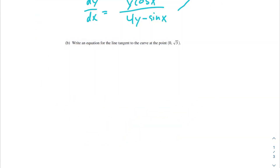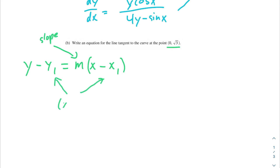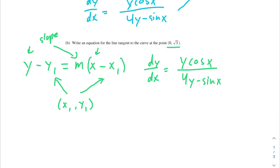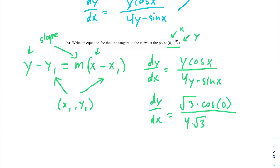Next question: write an equation for the line tangent to the curve at the point (0, square root of 3). We can use point-slope form: y minus y1 equals m times x minus x1, where m is our slope. We need to figure out our slope using our dy over dx from the last problem. Plugging in 0 for x and square root of 3 for y, we get dy over dx equal to square root of 3 times cosine of 0 over 4 times the square root of 3 minus sine of 0.